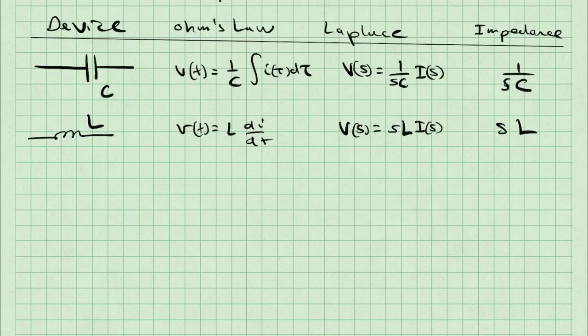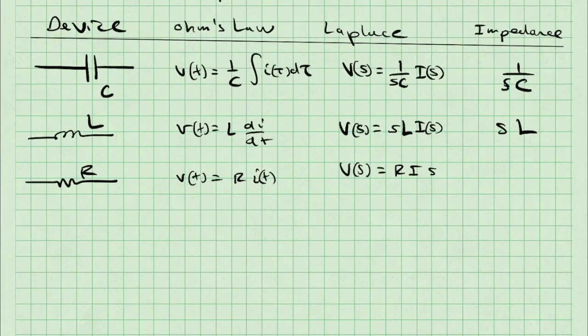For a resistor in the time domain, V of T is just I times R. In the Laplace domain, V of S is just R times I, which gives me an impedance of R.